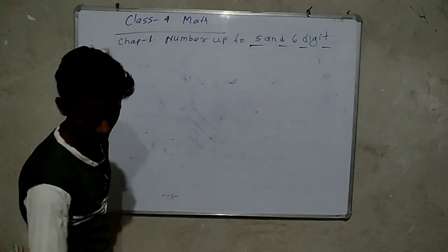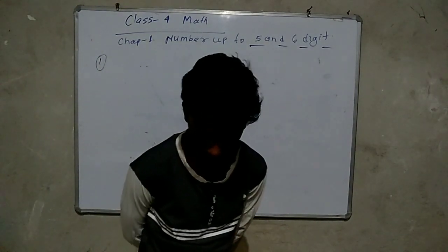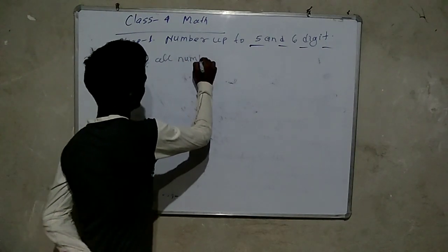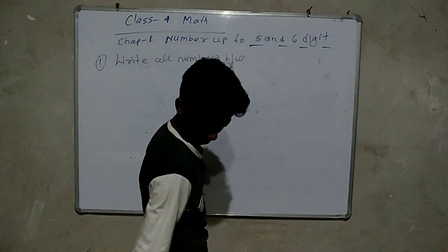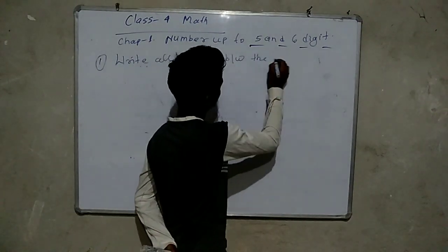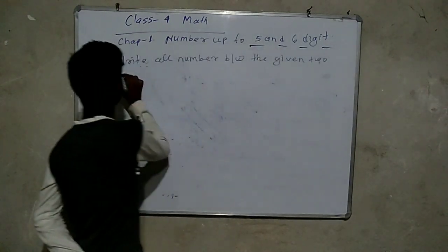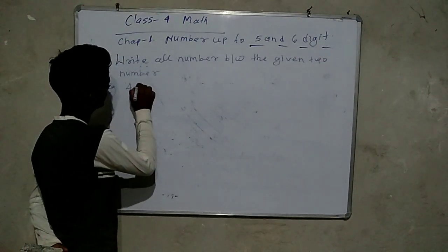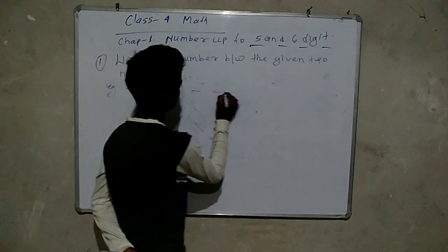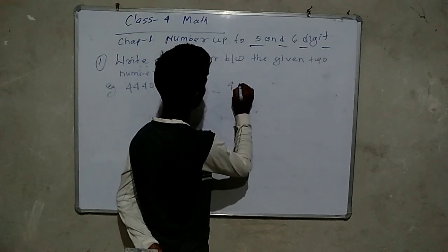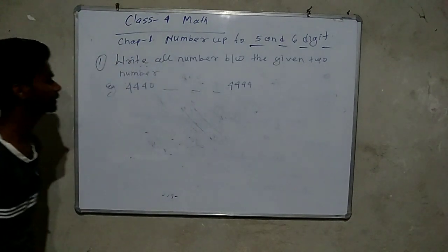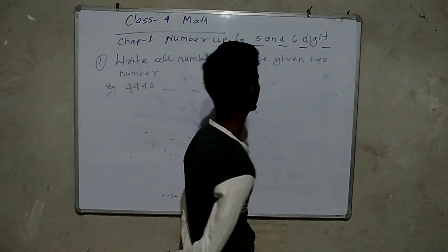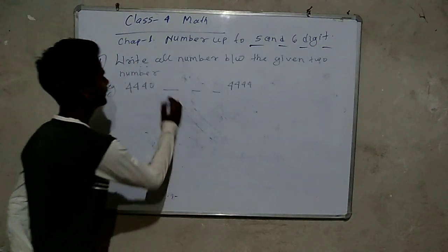Question number 1: Write all numbers between the two given numbers. For example, write all numbers between 4440 and 4444.